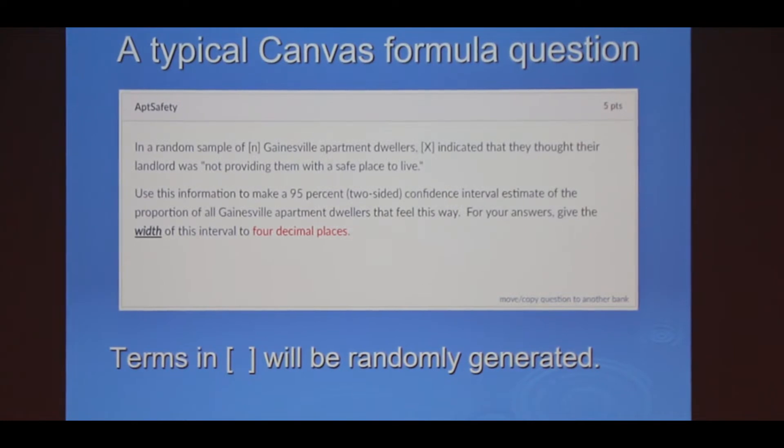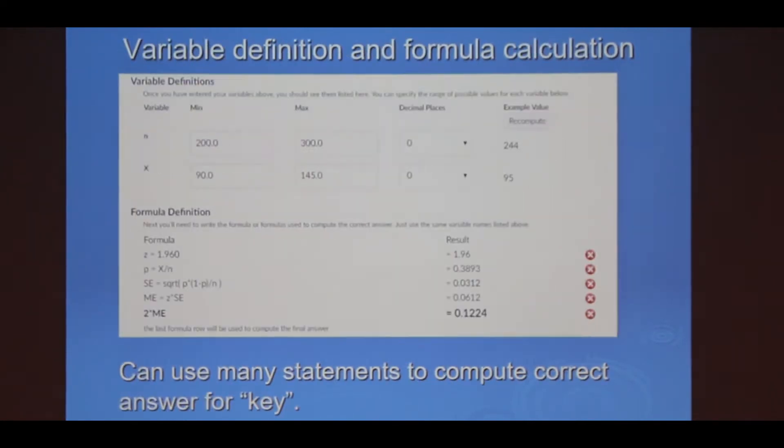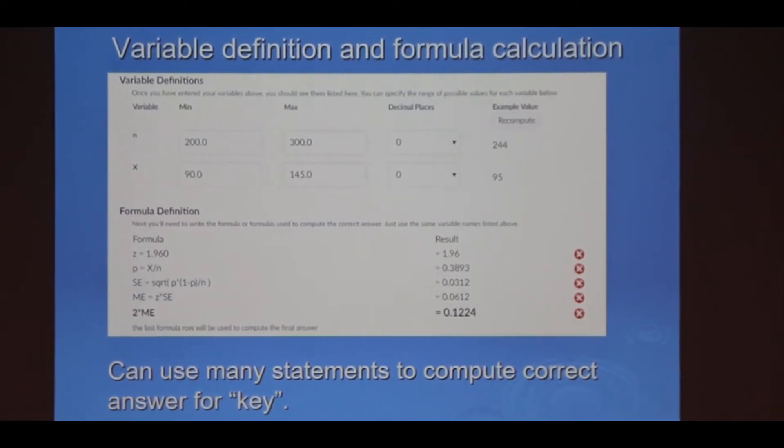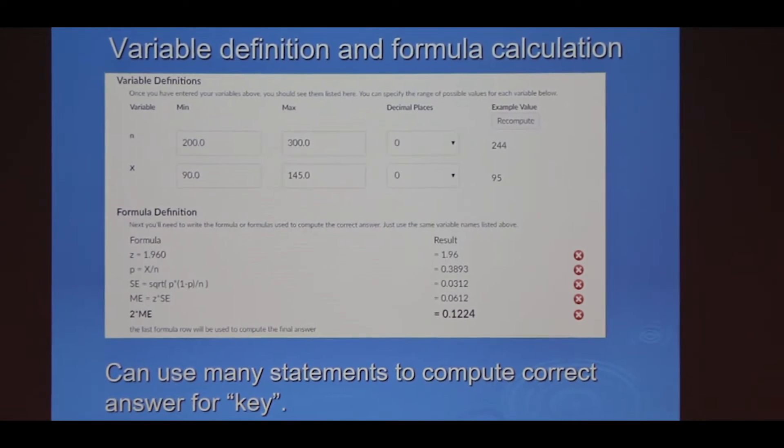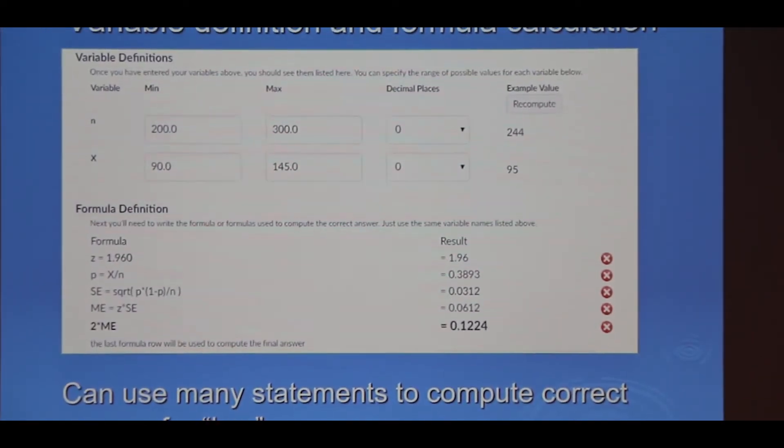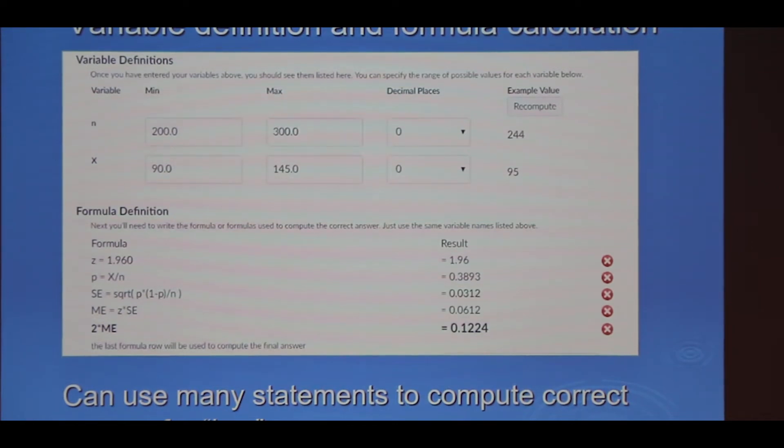In a formula question in Canvas, you have a numerical answer and you need to specify what values of N and X would show up. You can have five different sets of values or you can have 50. This is what the code looks like that actually generates the questions and then generates the right answers.